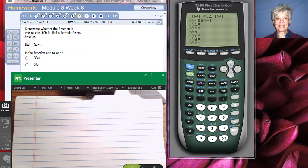The instructions say determine whether the function is one-to-one. If it is, find the formula for its inverse. So we are going to graph 9x minus 1, and there you have a constantly increasing line, a line with a positive slope. This is definitely one-to-one if you draw a horizontal line through it.